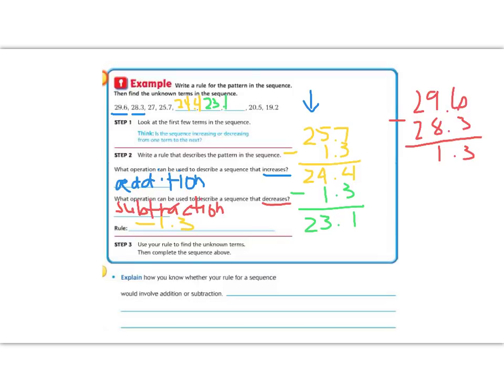We still have one more blank to fill in, so minus 1.3. Now we have to borrow, because 1 minus 3 we can't do. So the 3 becomes a 2. Now we have 11. 11 minus 3 gives us 8, 2 minus 1 is 1, and bring down the 2. So we have 21.8. So those are filling in all of our blanks.